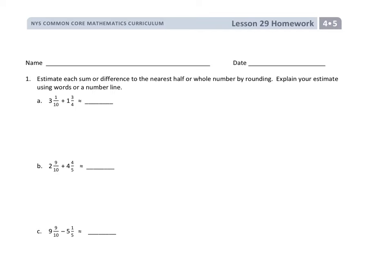Tonight's homework is a review of a lesson that we did last week. The best way for students to do the rounding is to draw the number line if they're not 100% sure. For each number in the problem, they're going to need a separate number line because each number needs to be rounded to its nearest whole number.